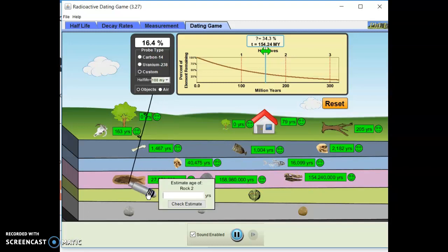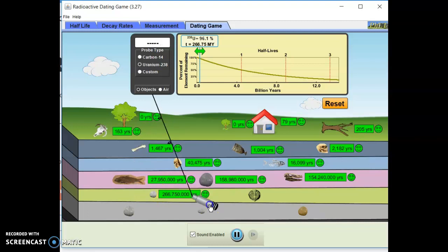Okay, this is rock two. Looks like uranium's good here. Ninety-six. Four and sixty-six million. One hundred and fifty thousand. There we go. One hundred and fifty thousand.